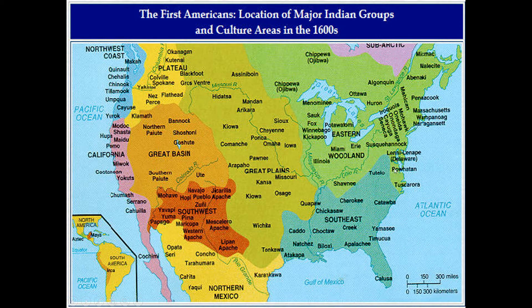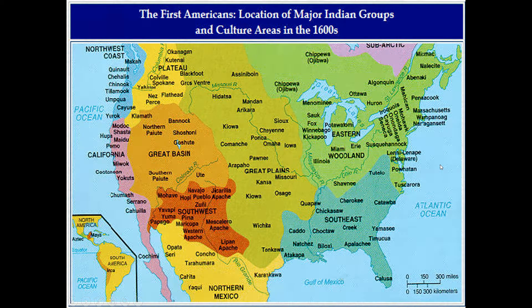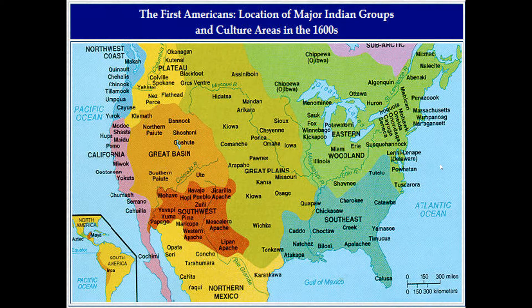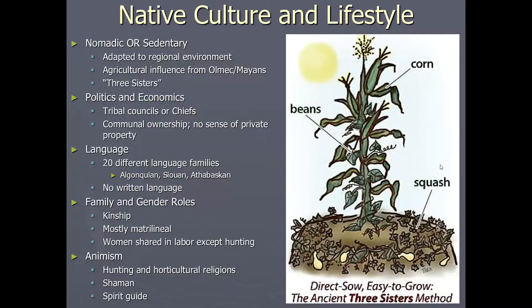As we continue to push west throughout the years — through the American Revolution, the Louisiana Purchase, and Manifest Destiny — we begin to encounter Native Americans, and our history hasn't been the best when it comes to how we handled them. Looking at a map, you can see four major distinct groupings of Native Americans in America.